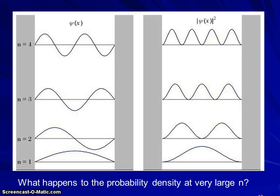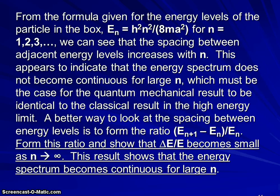From the formula that was given for the energy levels on the previous couple of slides - energy equals h²n²/8ma² - we can see that the spacing between the energy levels gets larger as n gets larger. And this appears to indicate that the energy spectrum doesn't become continuous at large n, and that has to become continuous in order for the quantum mechanical result to start to be identical to the classical result in the energy limit.